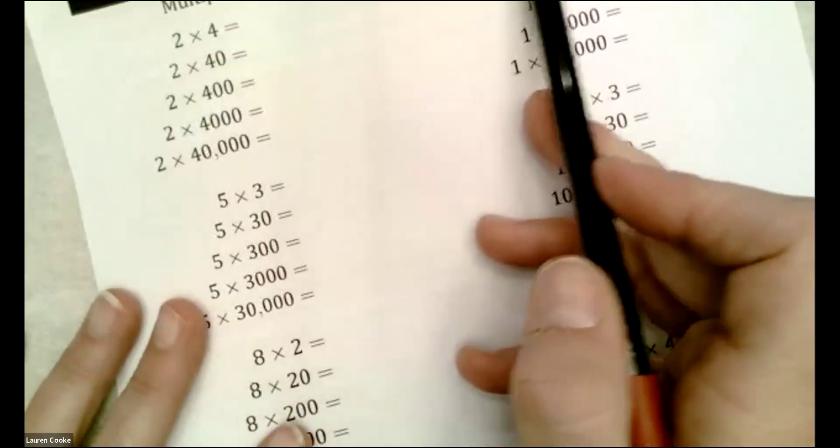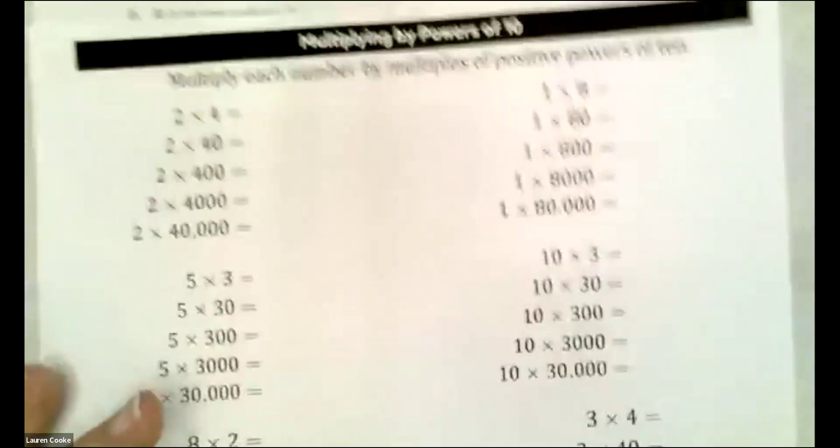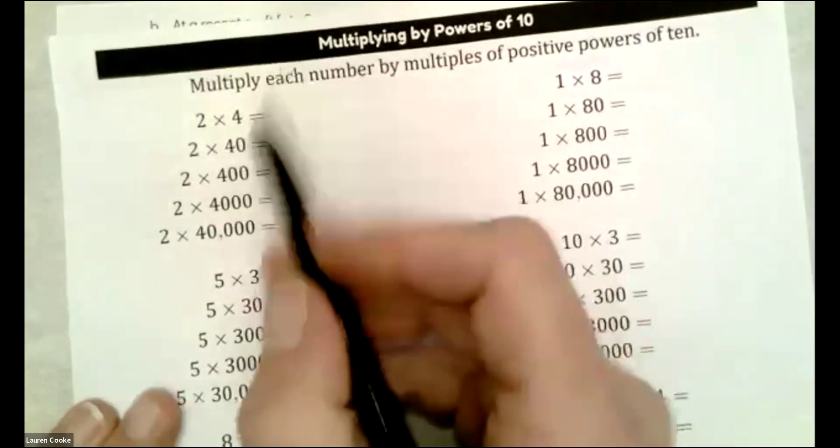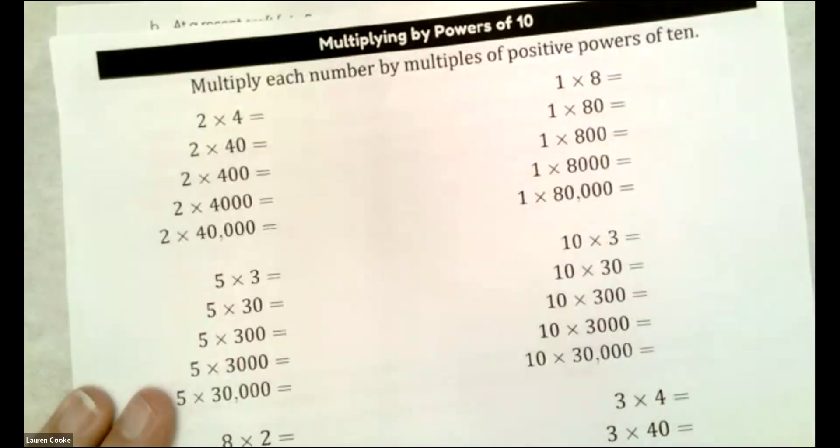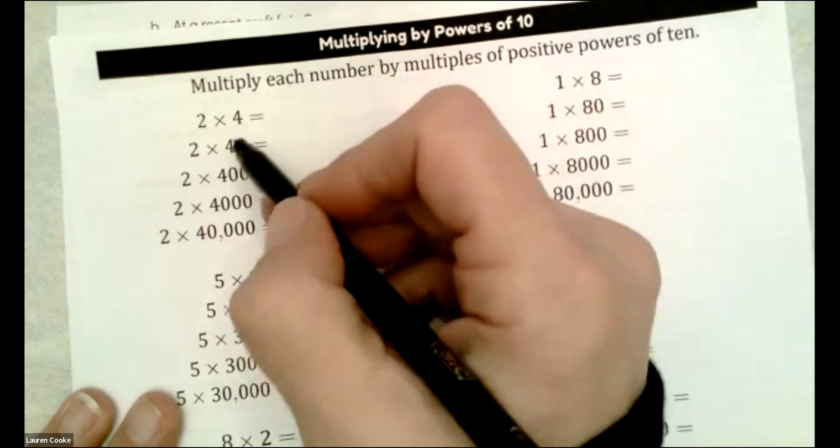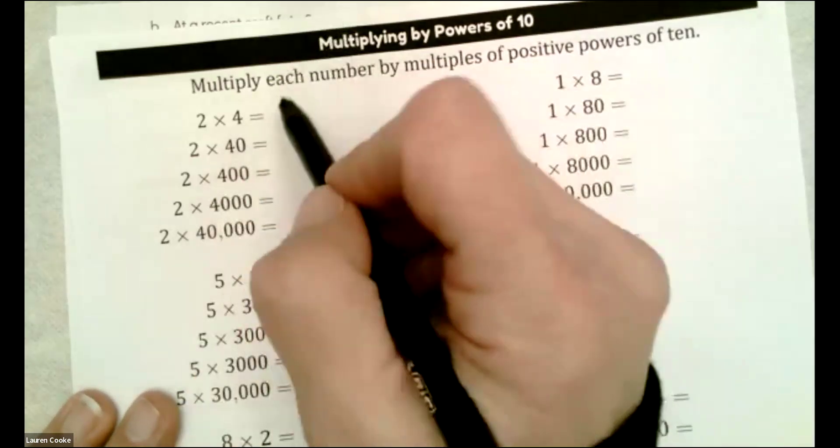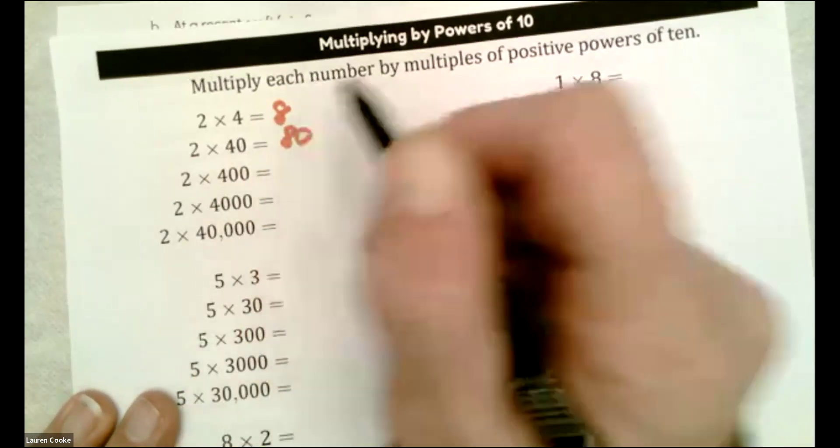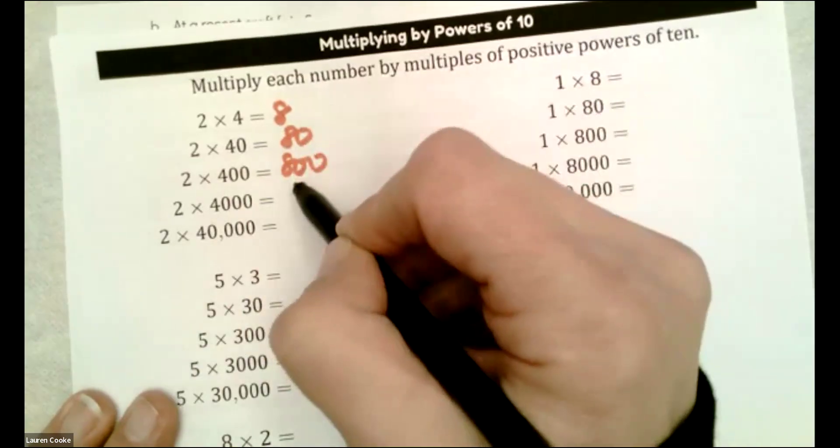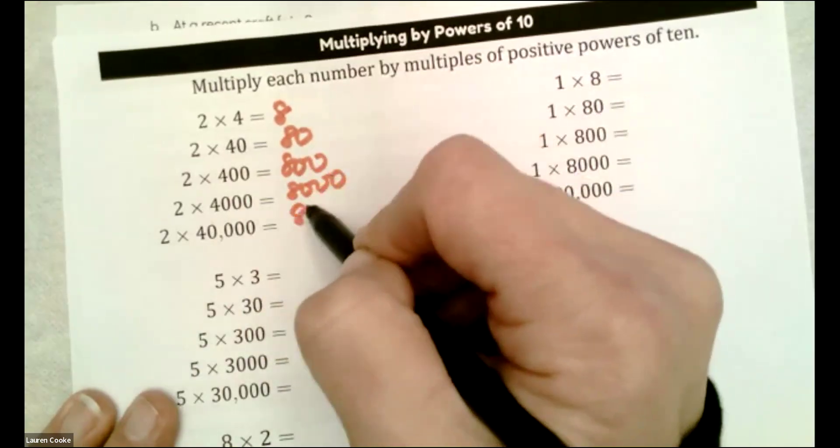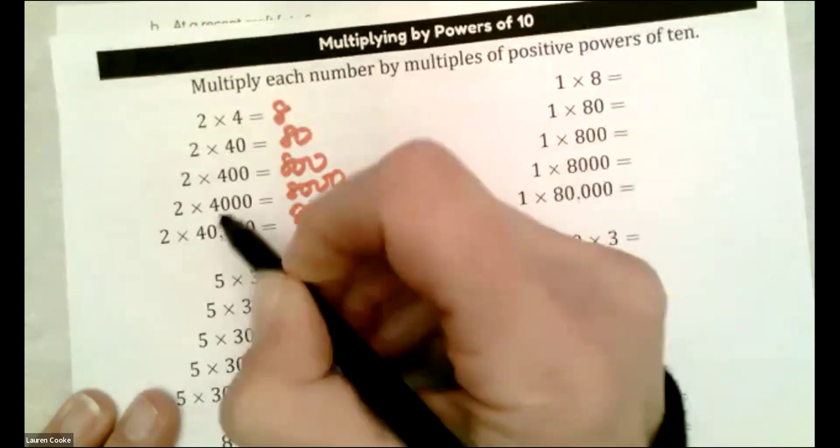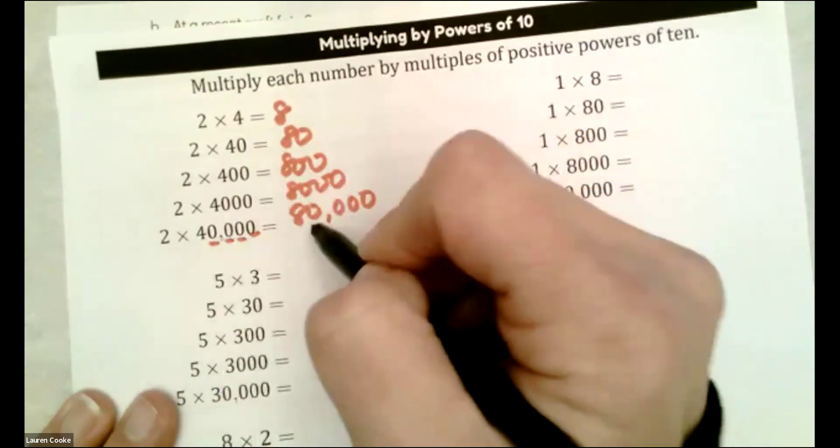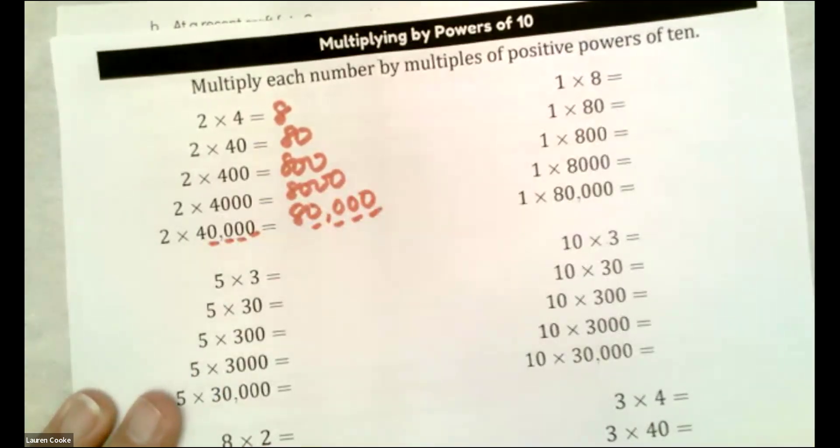Multiply each number by multiples of positive powers of 10, because there are negative ones, but you won't get that until high school. I don't think, maybe eighth. So I'm just going to do probably the first two, but I definitely want the rest of you to finish them, but this is we're just practicing powers of 10. So this is 8, 80, 800, 8,000, and then 80,000. Look one, two, three, four, one, two, three, four.